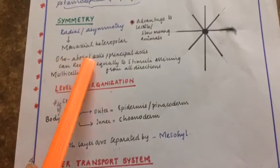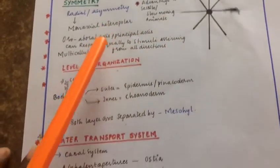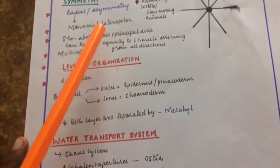The oro-aboral axis is the principal axis. The main advantage of this is that the organism can respond equally to stimuli arriving from all directions.